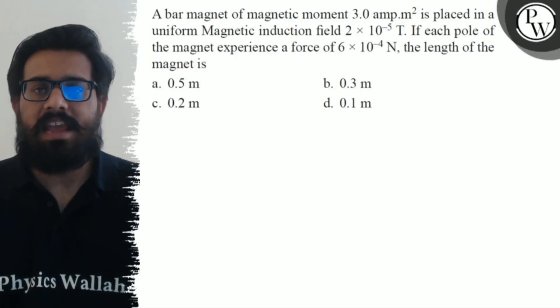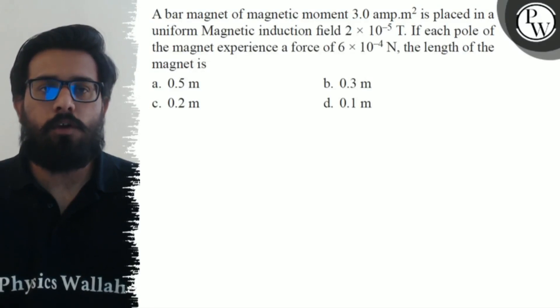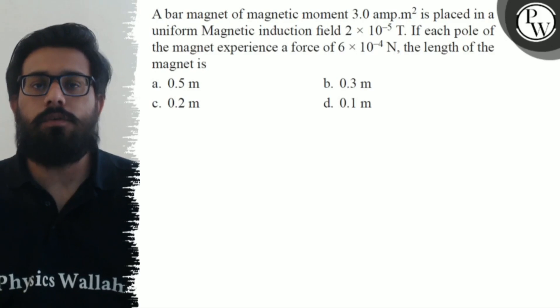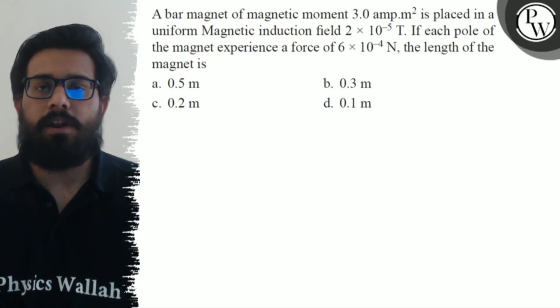A bar magnet of magnetic moment 3 ampere meter square is placed in a uniform magnetic induction field 2×10⁻⁵ tesla. If each pole of the magnet experiences a force of 6×10⁻⁴ newton, the length of the magnet is.